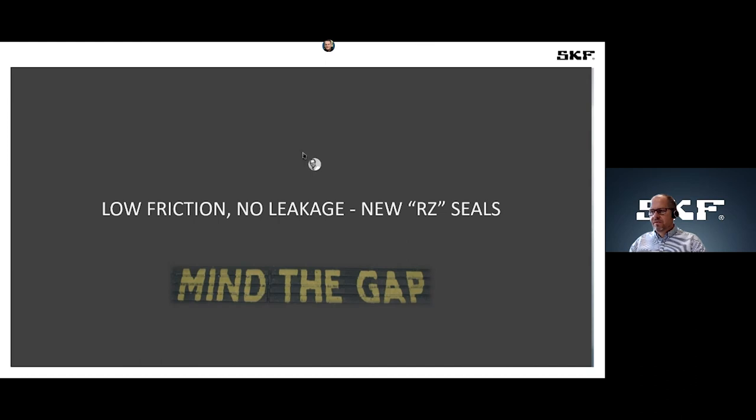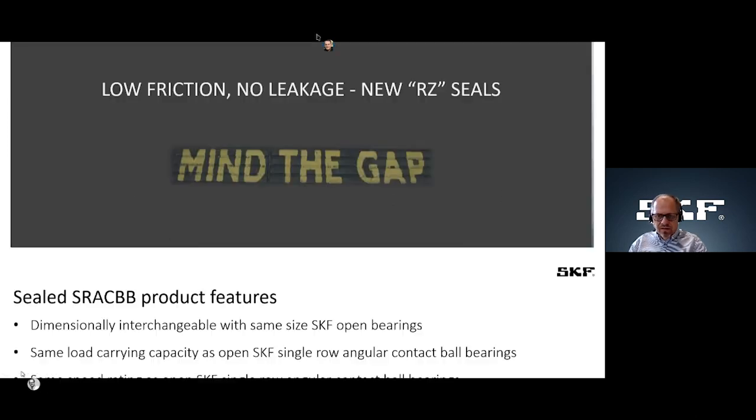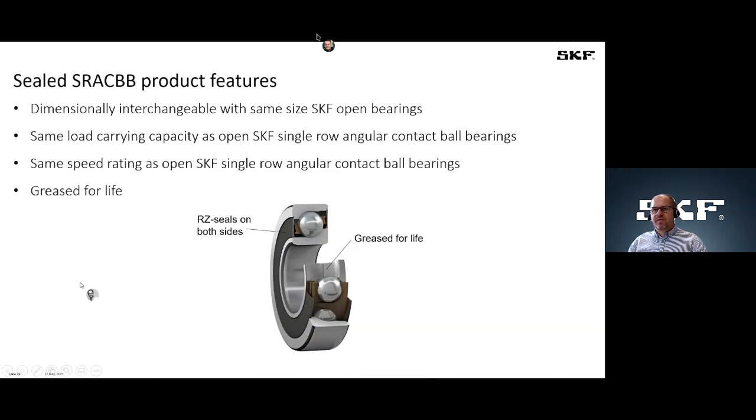Thank you Paul. So I will give you some news about our sealed angular contact ball bearing. So sealed angular contact ball bearing we introduced several years ago for the market. We equipped the angular contact ball bearing with two seals on each side. And as we use a non-contacting seal, we have the same load carrying capacity and the same speed rating like for the open pendant. So it's easy to interchange an open bearing with a sealed one. The bearings are greased for life.